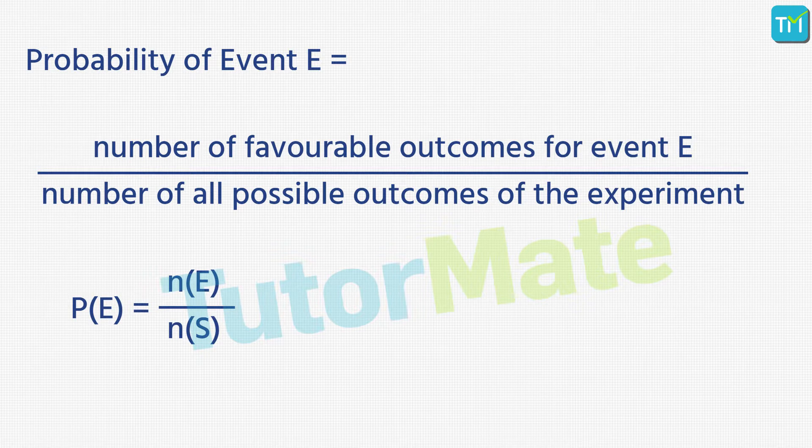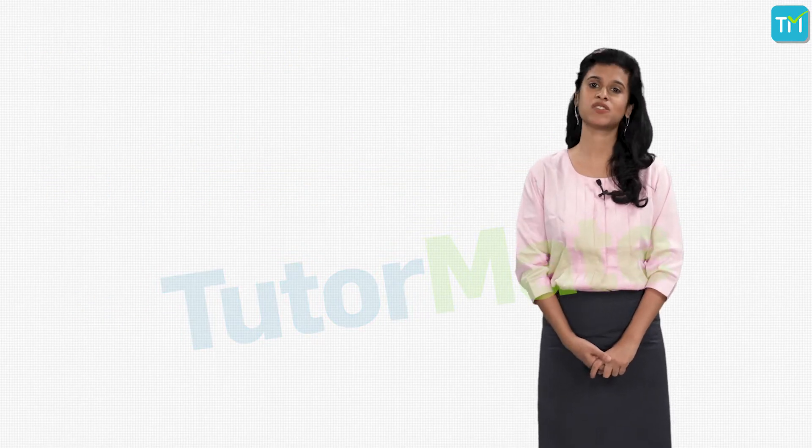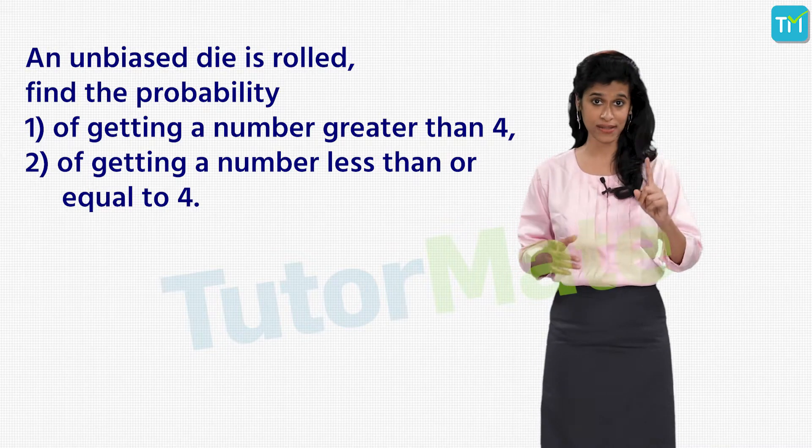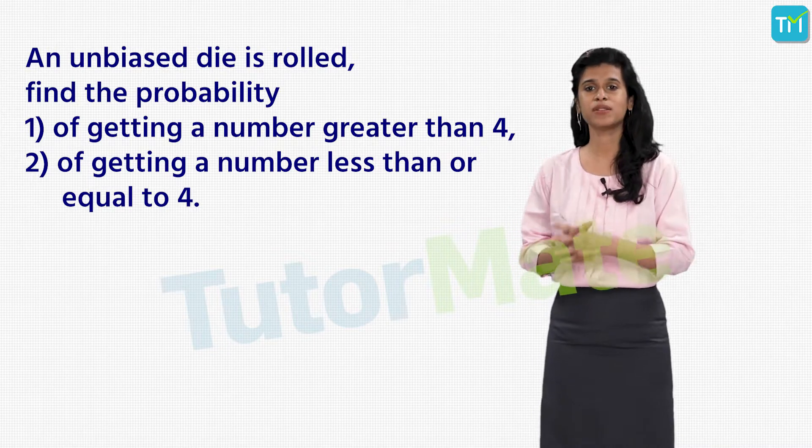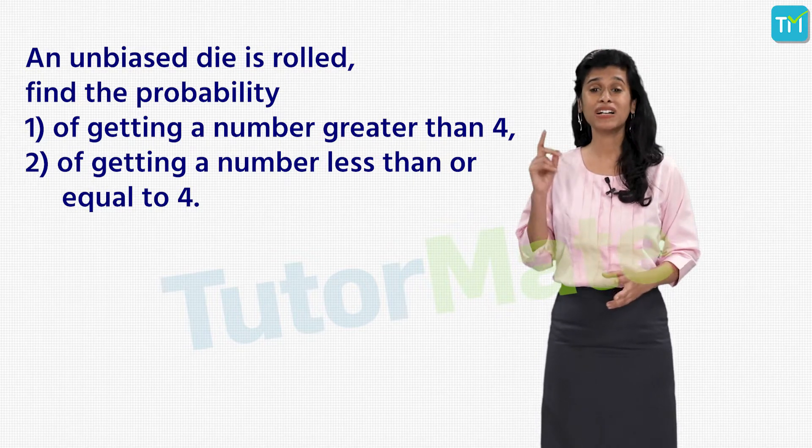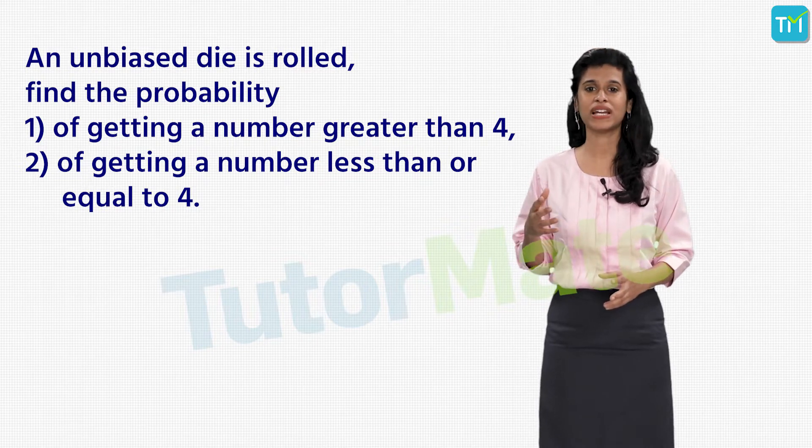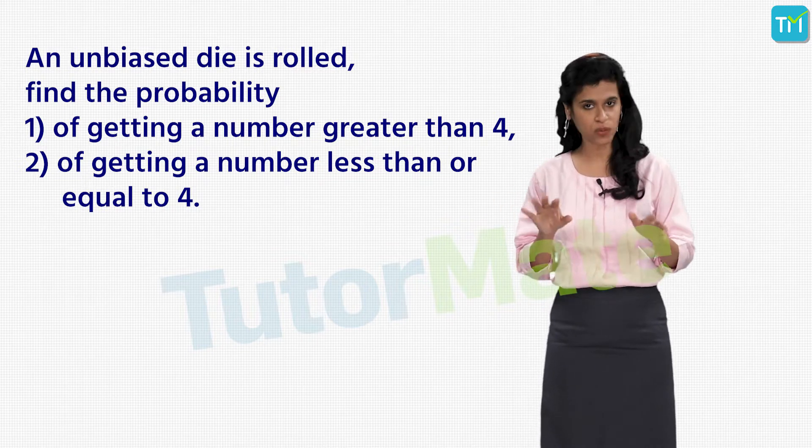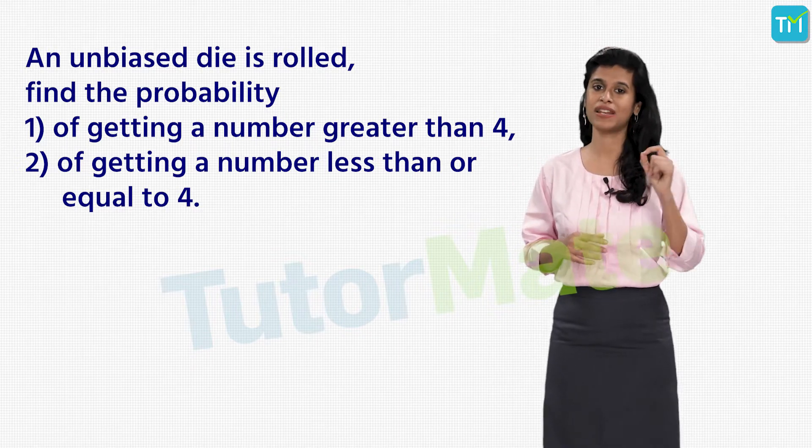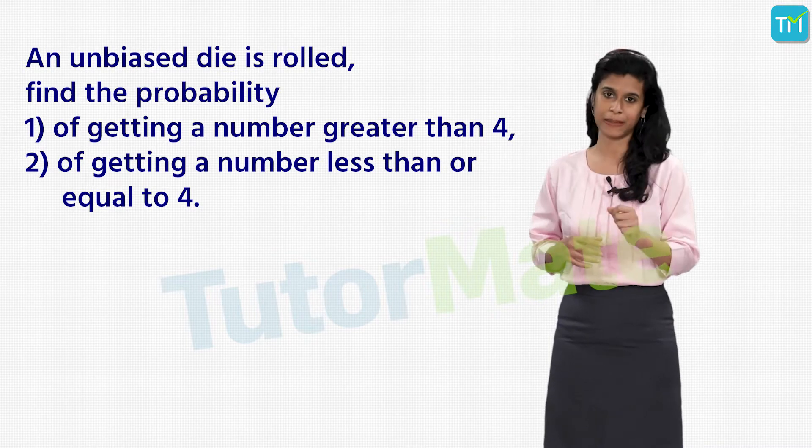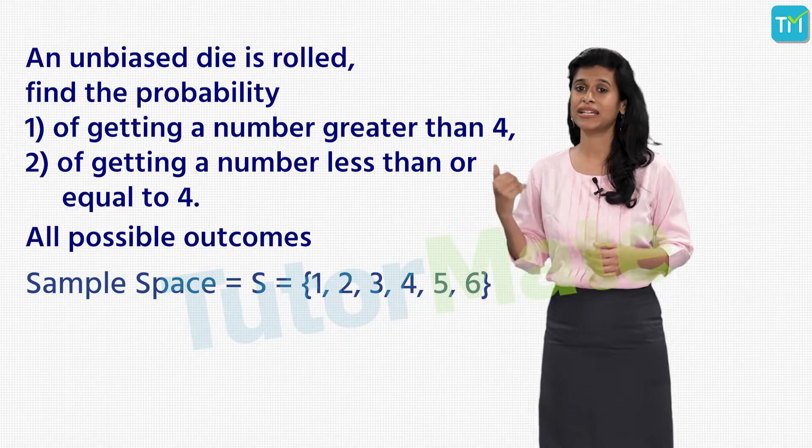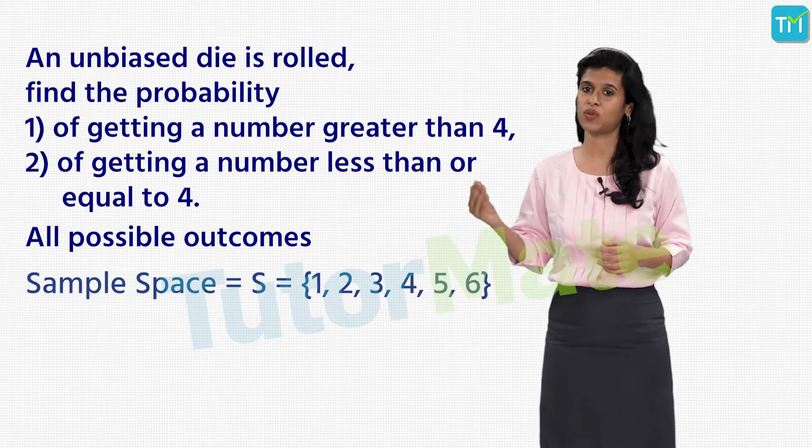So let's solve a few problems based on probability. In the first problem, let's say we throw a die once. Now we have to find the probability of two events. The first is of getting a number greater than four, and the second one is of getting a number less than or equal to four. First we will write down the sample space or the number of all possible outcomes for the die. We know that the possible outcomes when we roll a die are getting the number one, two, three, four, five, or six, right? And so n(S) will be equal to six.